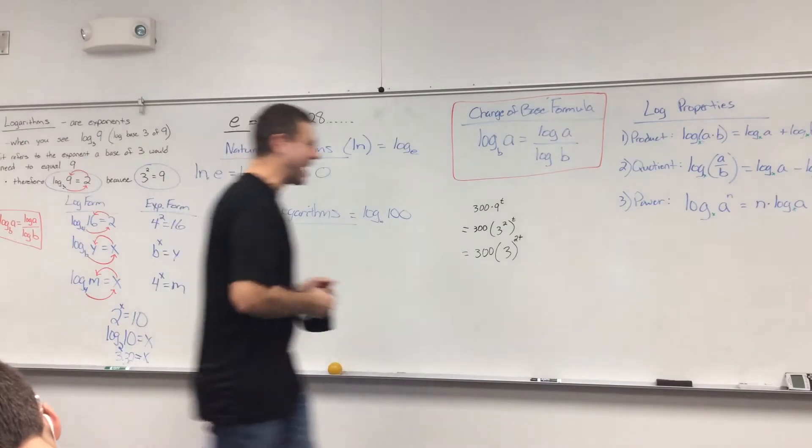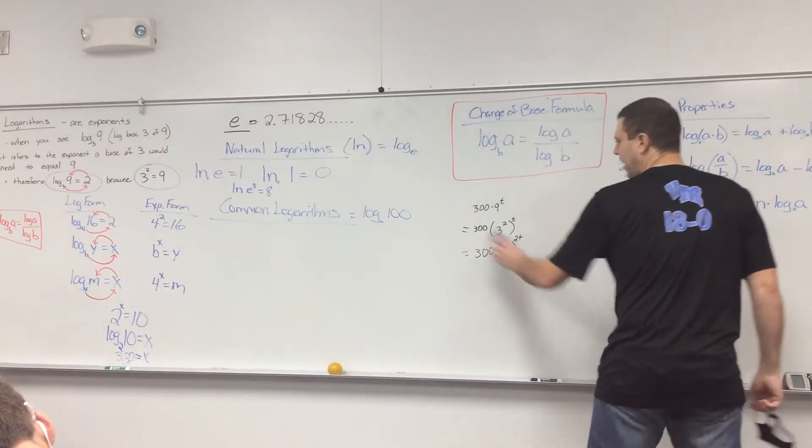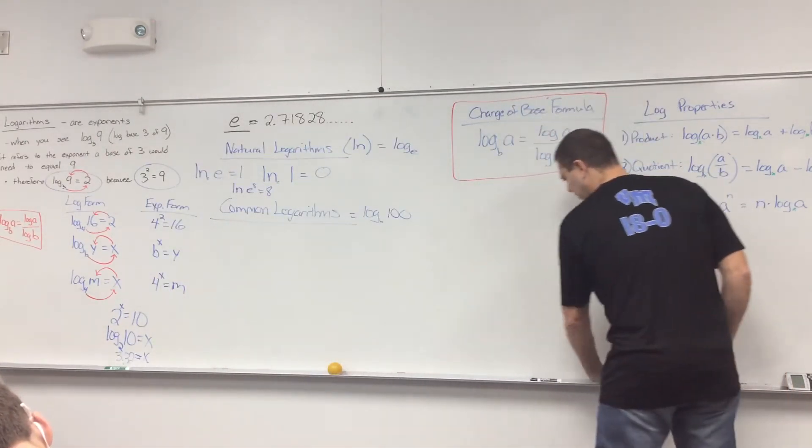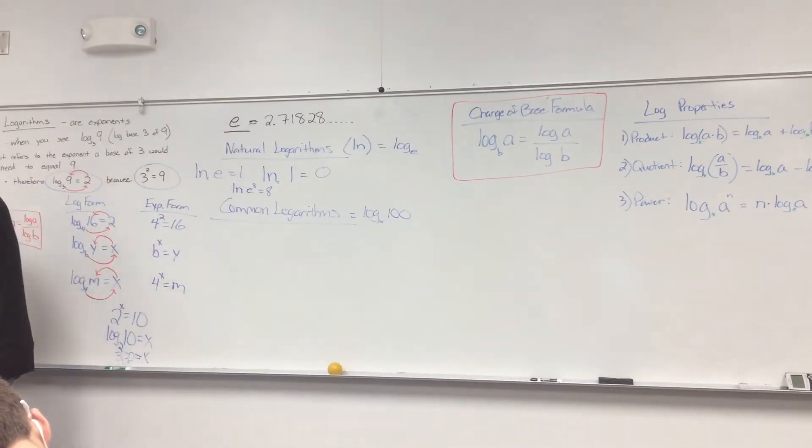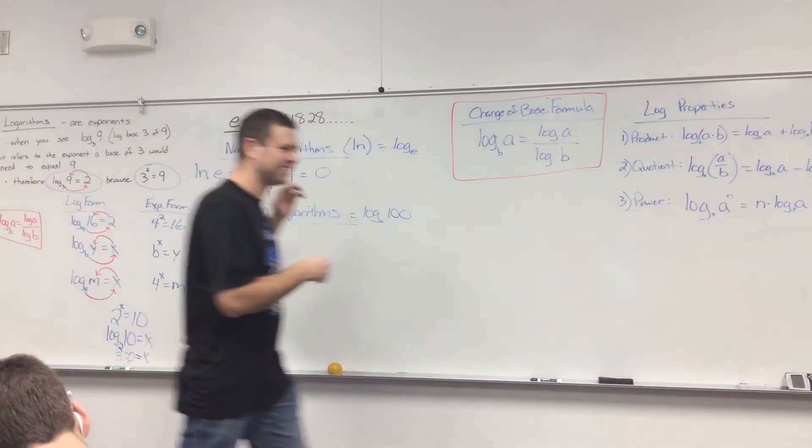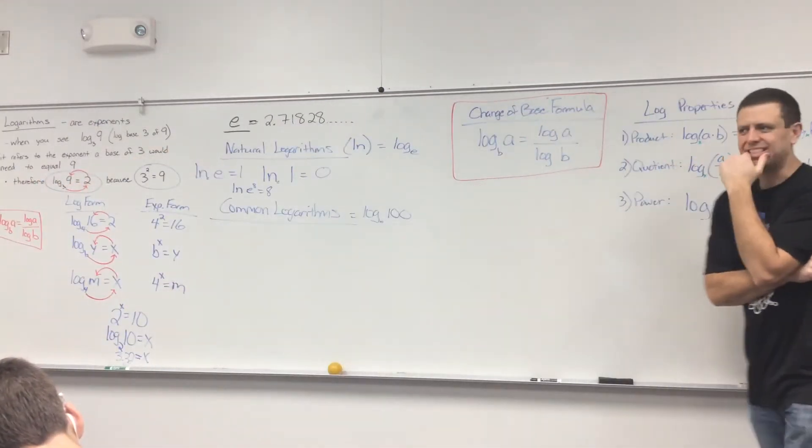Okay, just like pi was discovered, pi is like 3.14159 whatever, there is another number that was discovered that showed up in many different patterns of things. And this is the number E. This is the number E.